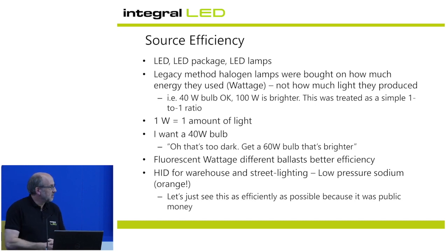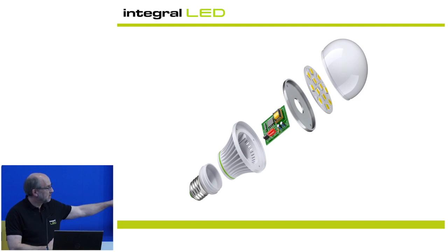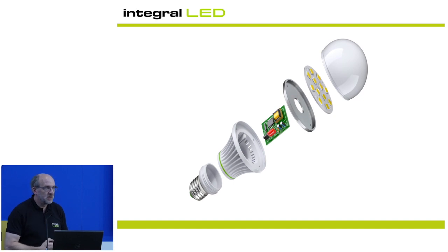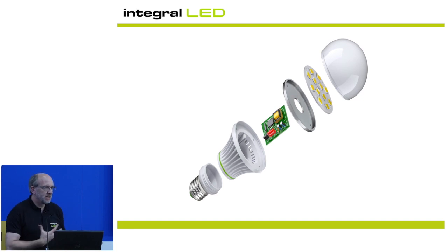Looking at source efficiency: the source is the little LED inside a yellow bath of phosphor. If we look at a typical lamp, you can see the board of LEDs — they're normally little square yellow sections. The actual LED chip is inside that, underneath the phosphor coating. But to create and drive that light you also have the electronics, which will use energy and produce losses. So as a system, you have that waste energy coming out as heat as well as light.